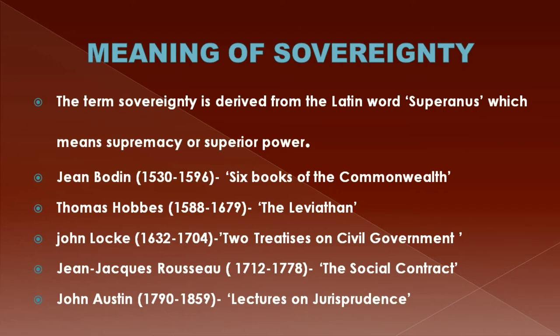To Rousseau, the sovereign was the general will, which was created by means of social contract. By the social contract, all individuals gave up all the rights which they possessed in the state of nature to the sovereign. According to him, sovereignty is absolute and indivisible, and his concept was known as popular sovereignty.